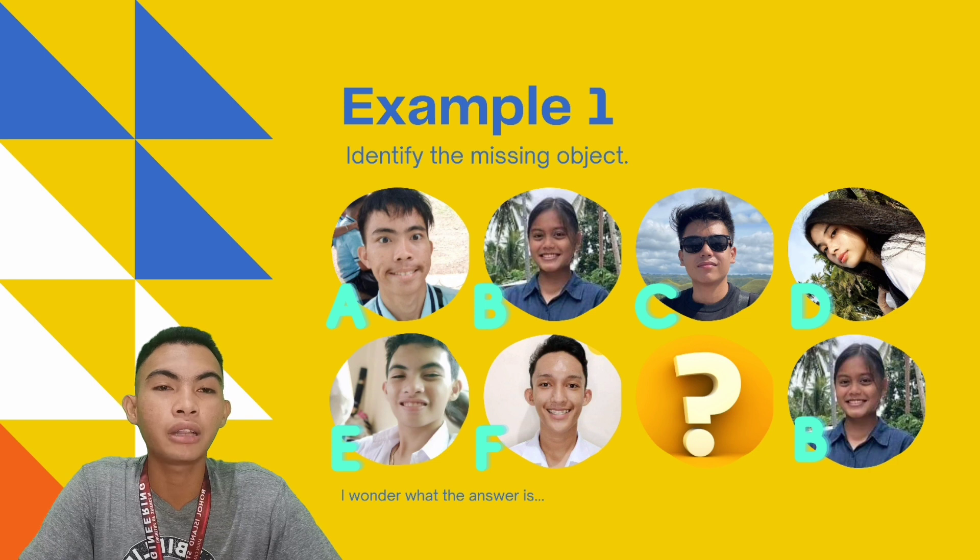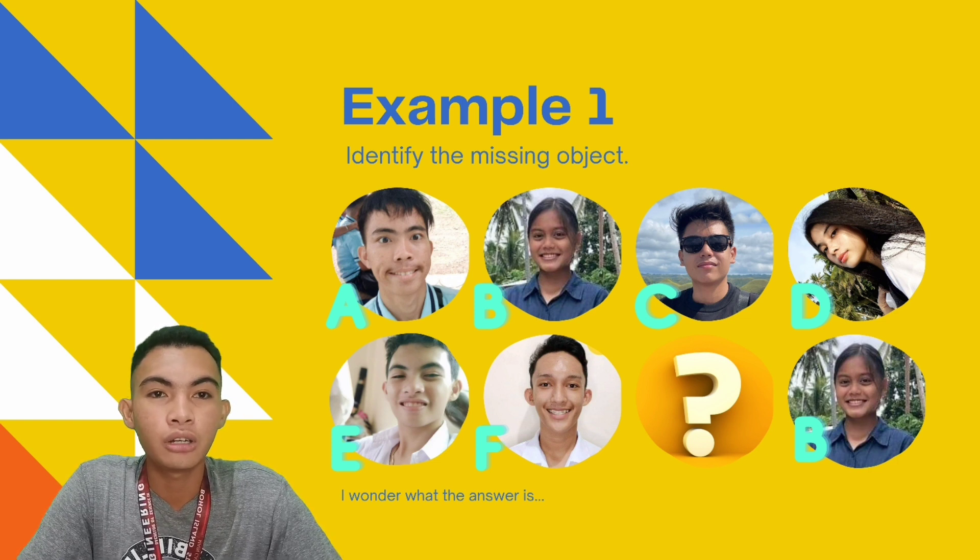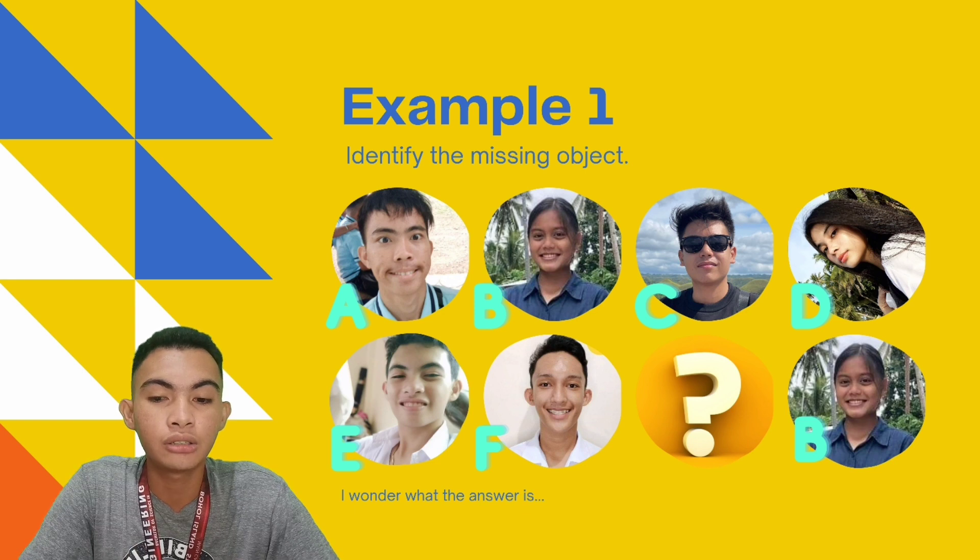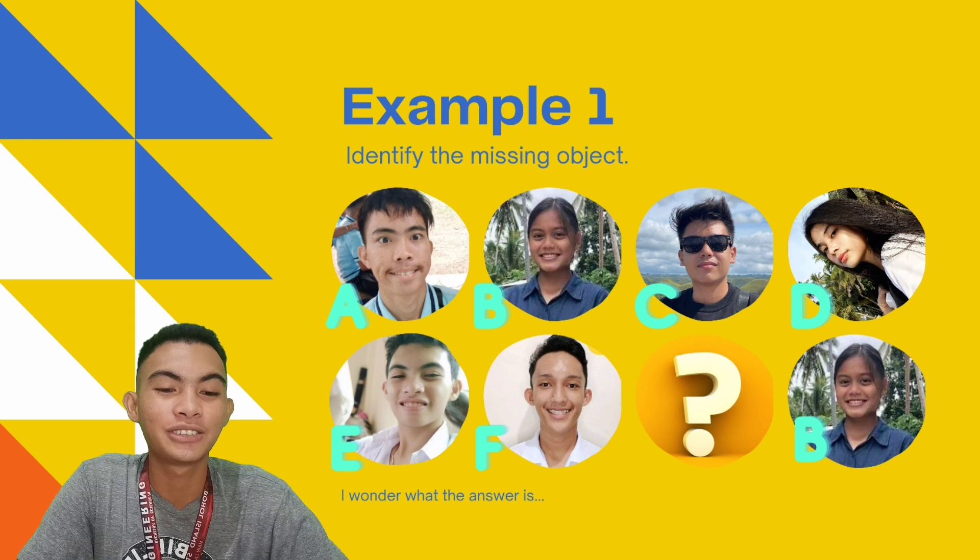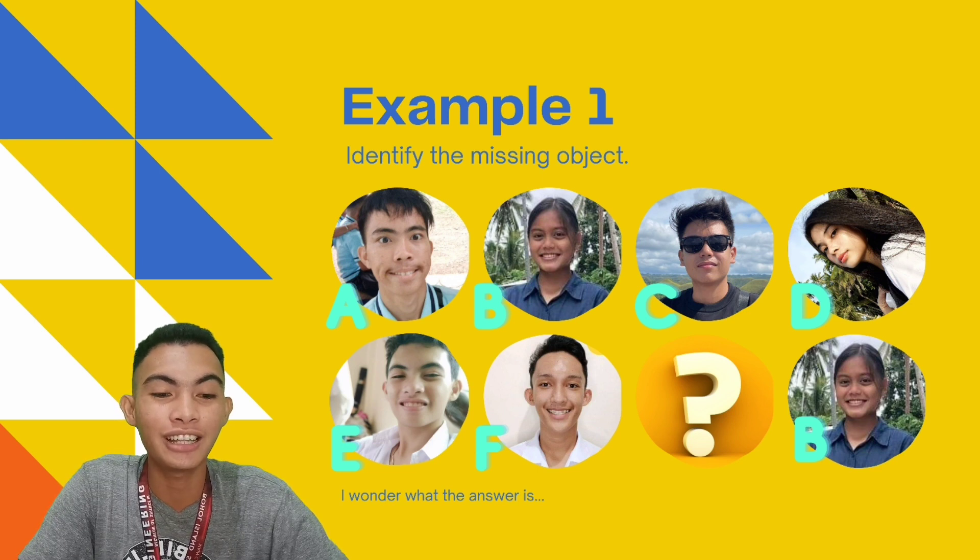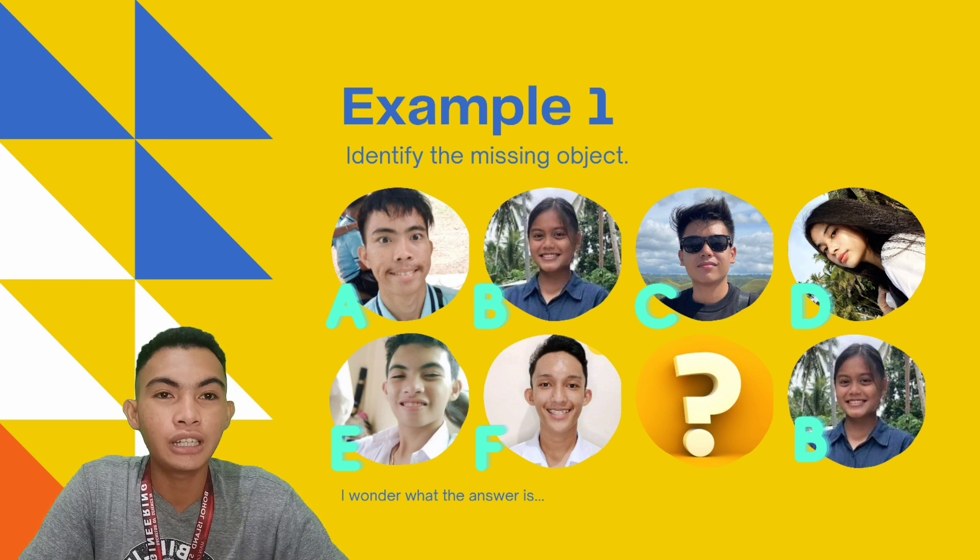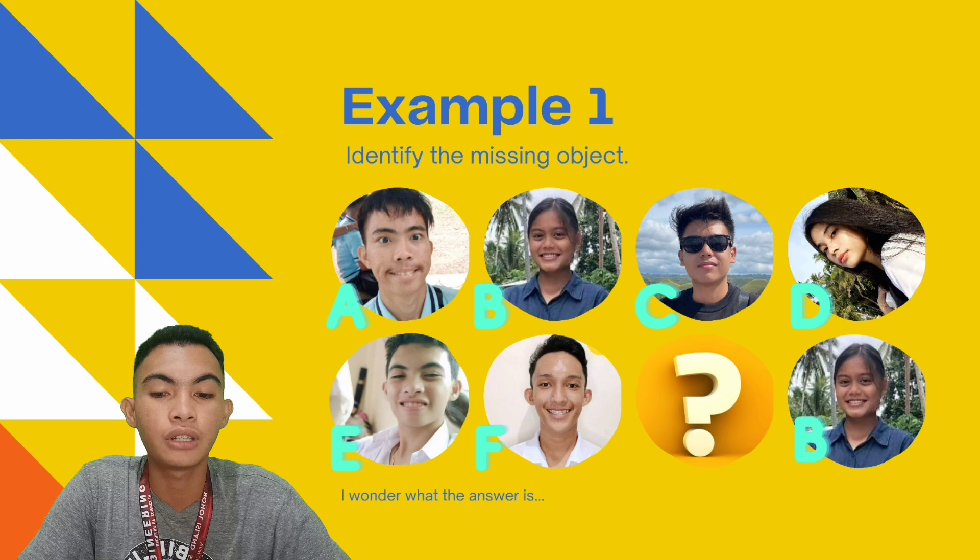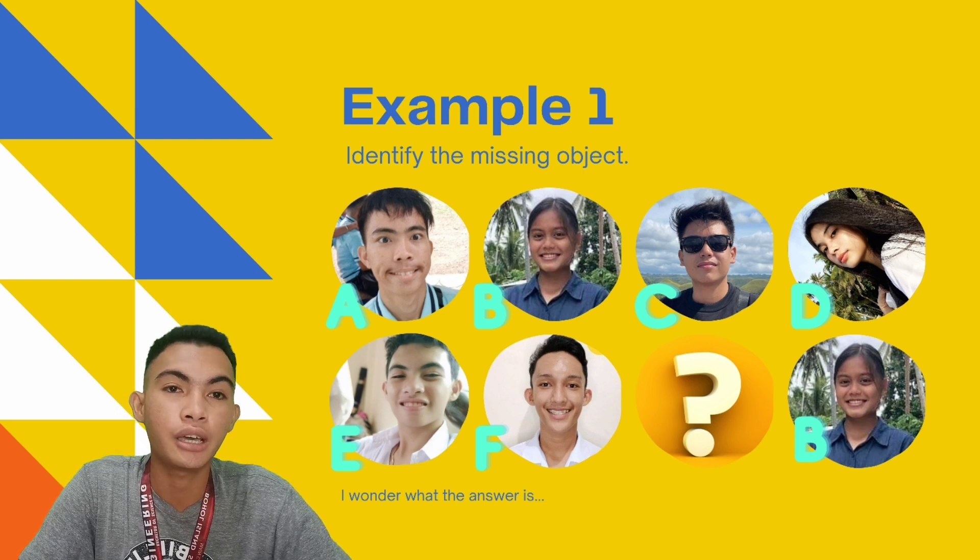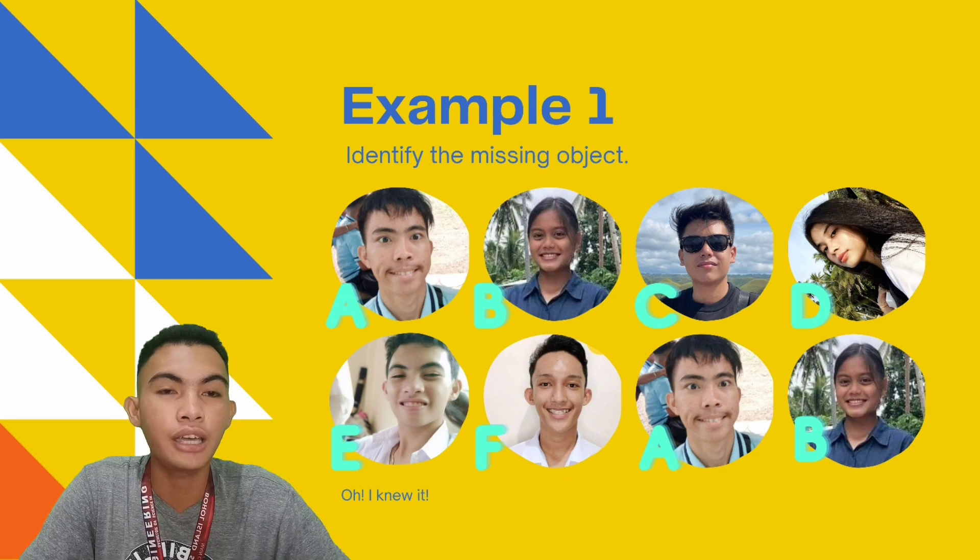Here, you will notice the pattern A, B, C, D, E, F, then the missing object and letter B. So, we have two possible answers, which is the letter next to F which is G, or the letter before B which is A. We can see that G cannot be the answer since it disrupts the sequence of the letters A, B, C, D, E, F. Therefore, we can say that A is the missing object.